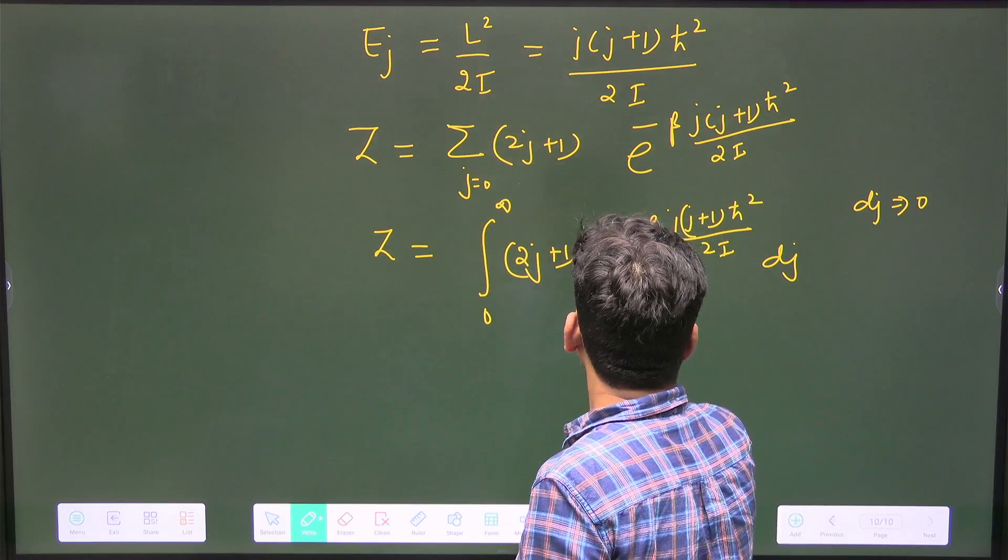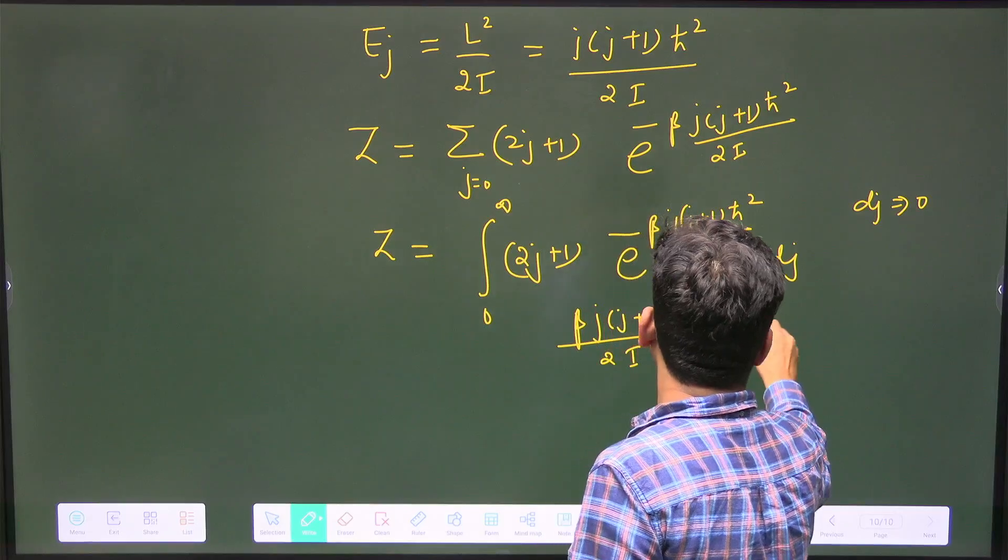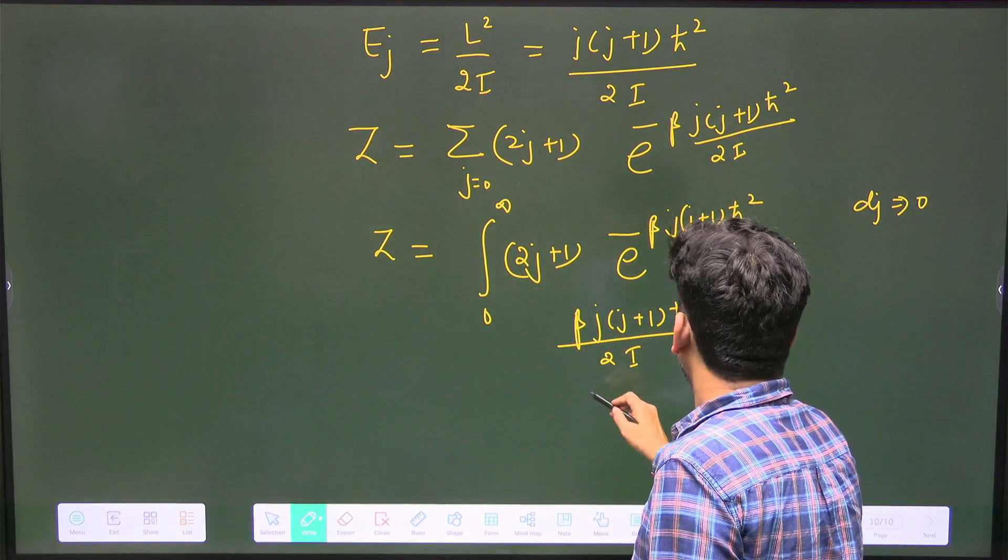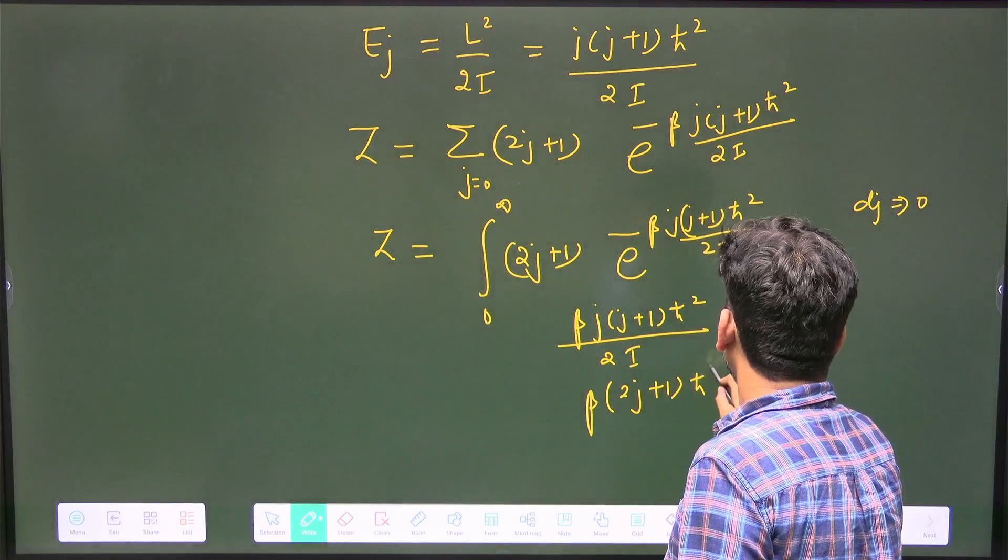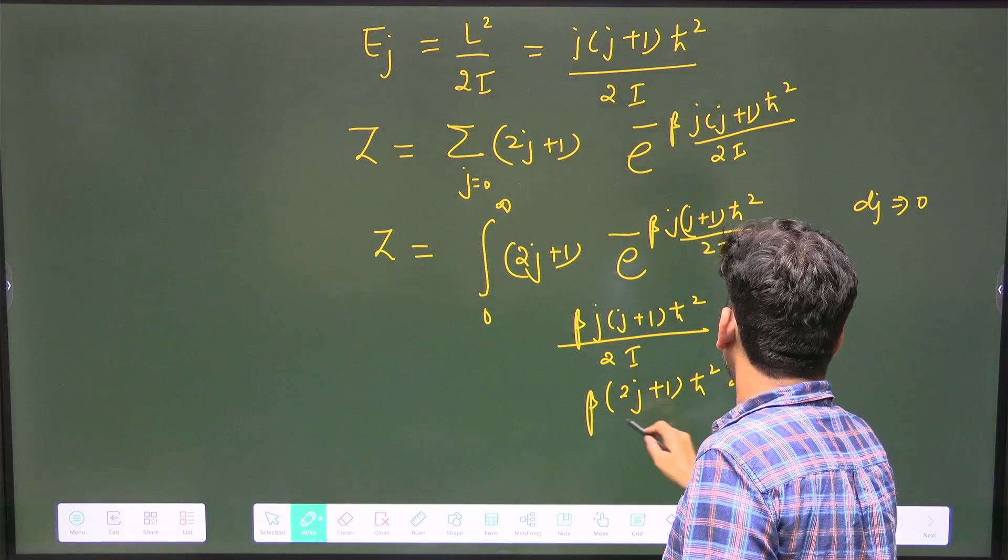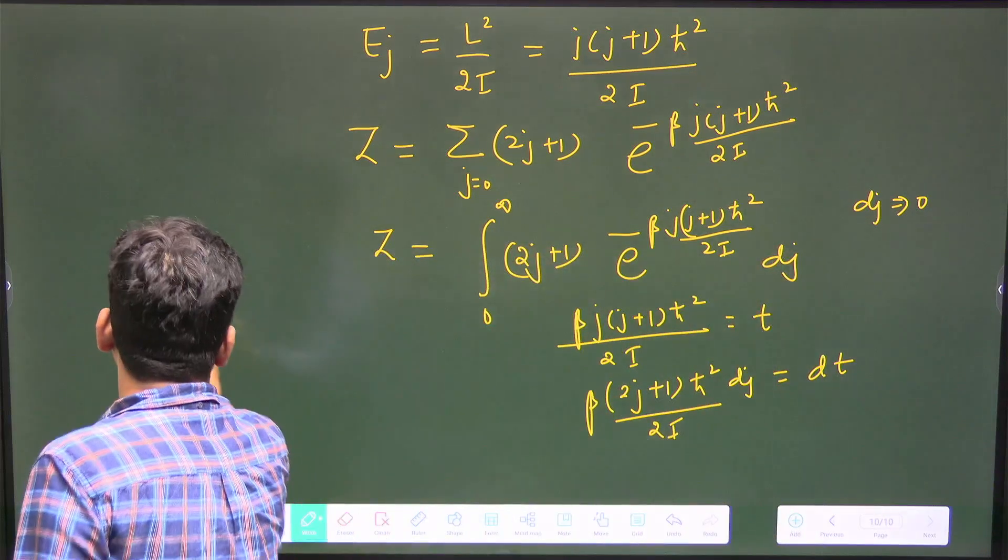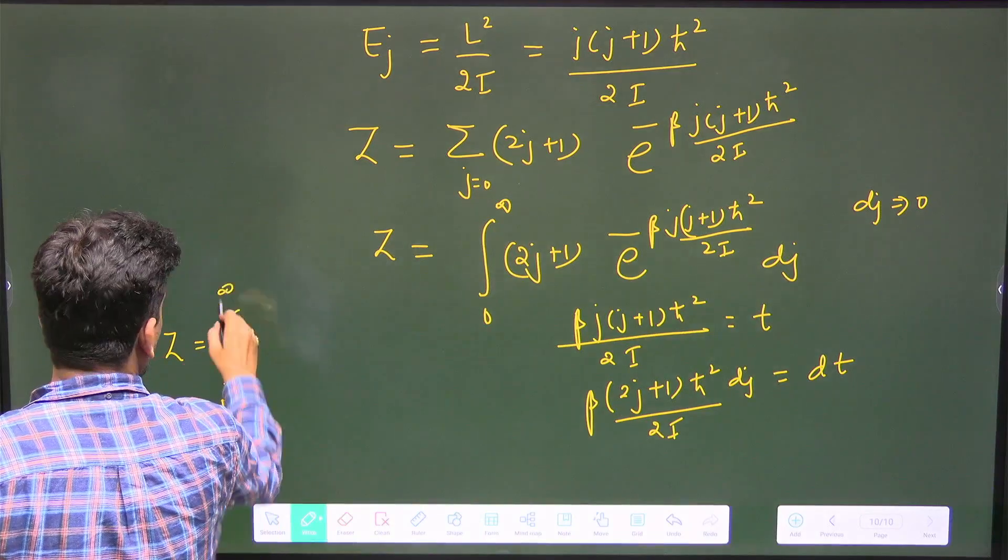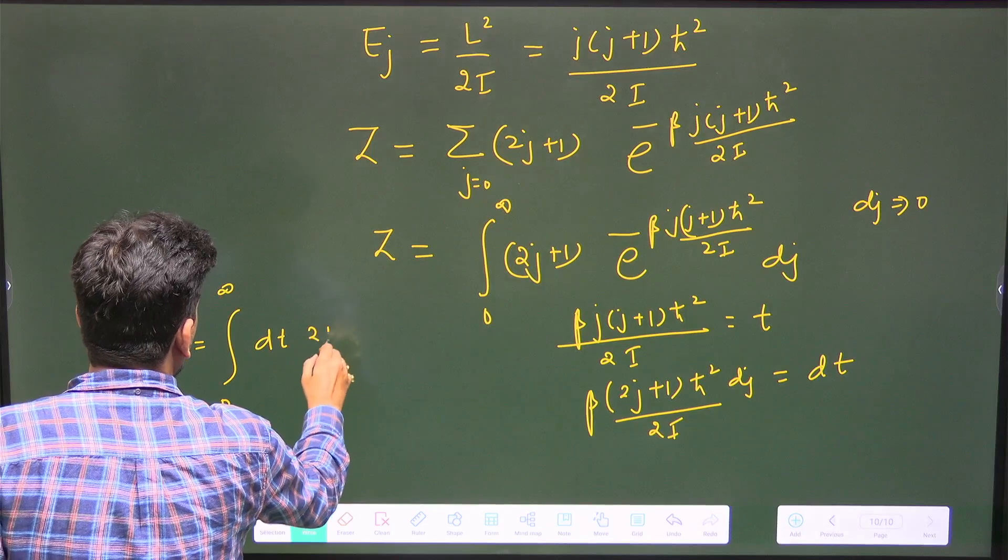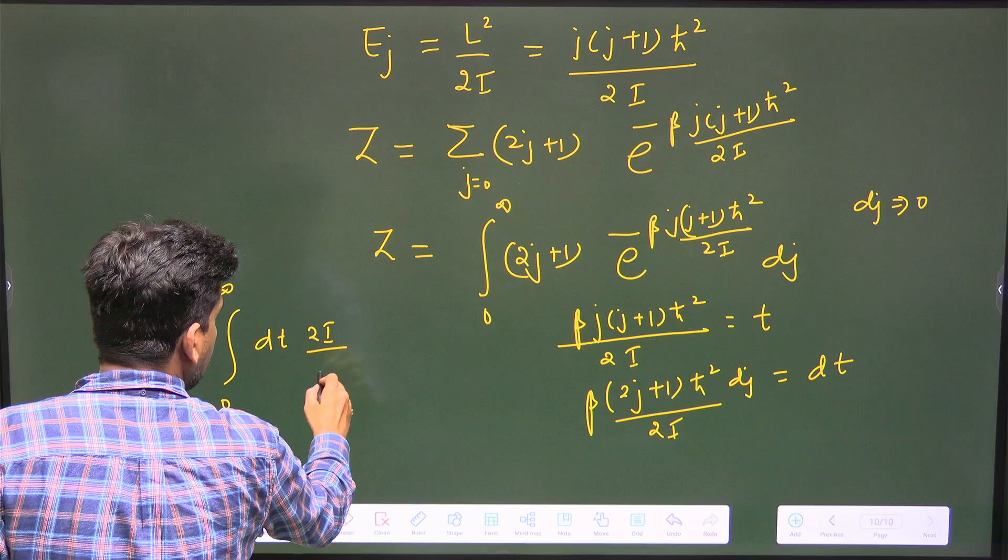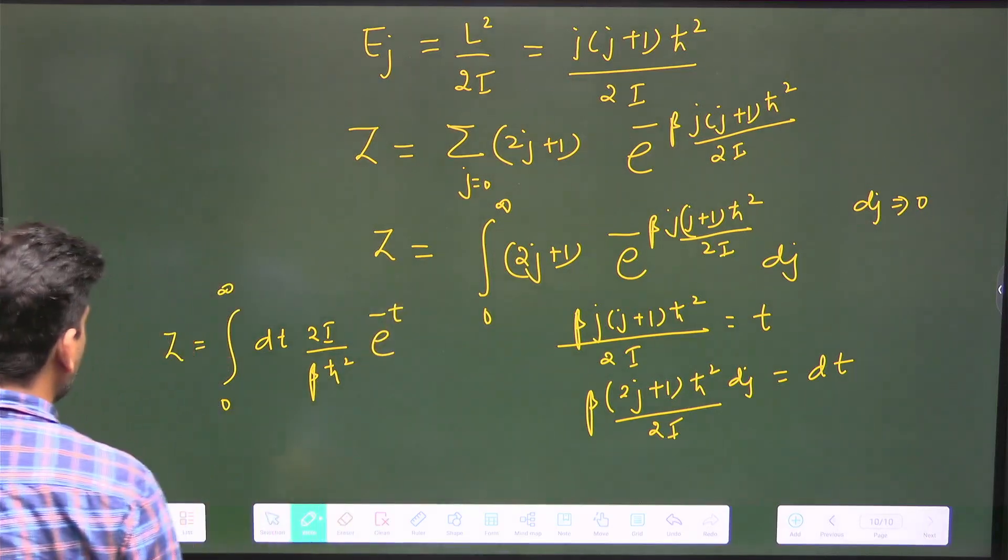Let β j(j+1)ℏ²/(2I) = t. Then β(2j+1)ℏ²/(2I) = dt. So Z becomes the integral from 0 to infinity of e^(-t) dt × 2I/(βℏ²).